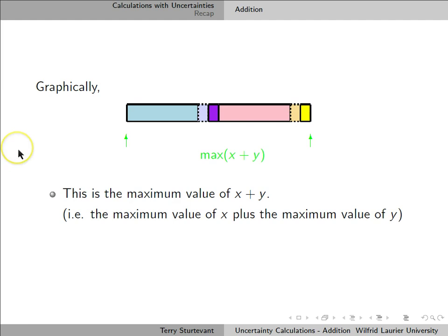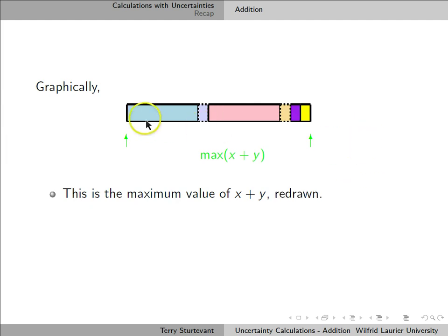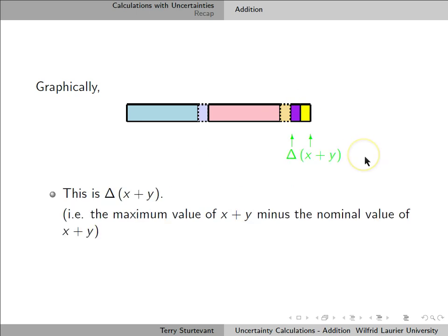For the maximum value of x plus y, we take the maximum value of x and add it to the maximum value of y. We can rearrange it so we have the nominal value of x, then the nominal value of y, and then this little additional bit out here. That little additional bit is the uncertainty in x plus the uncertainty in y.